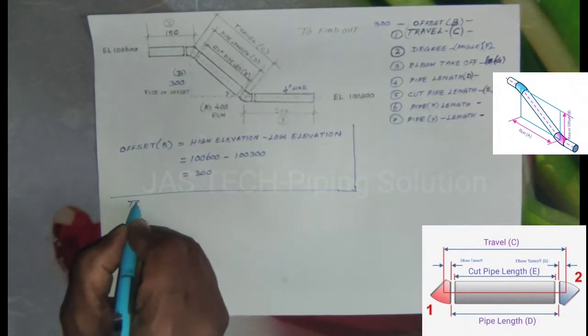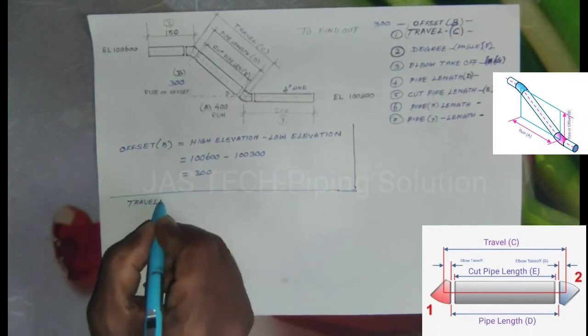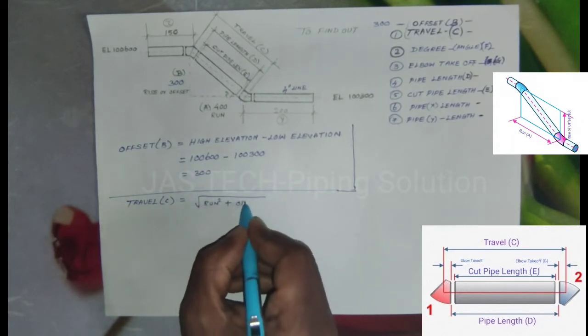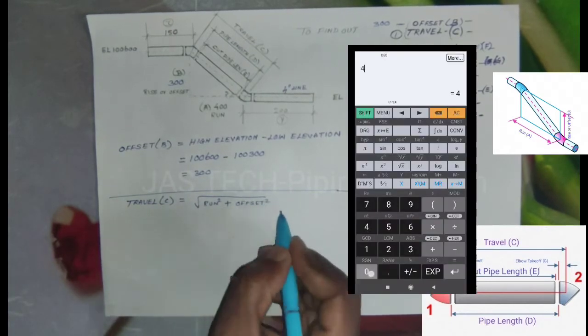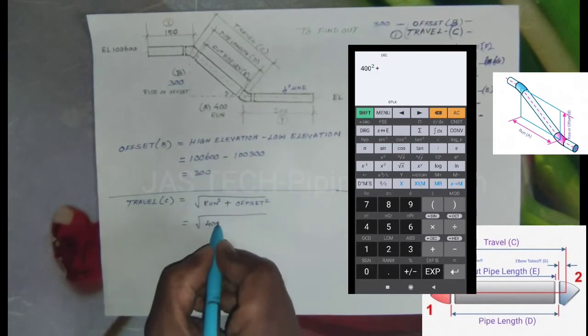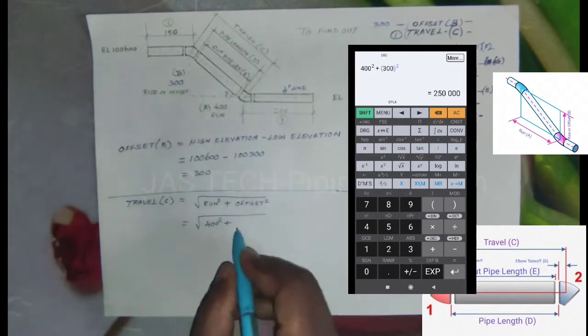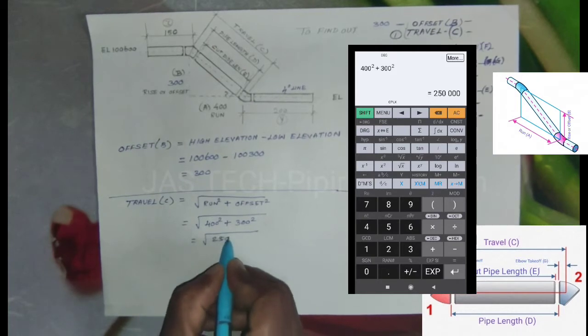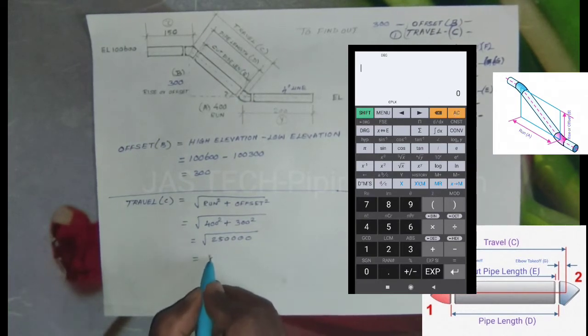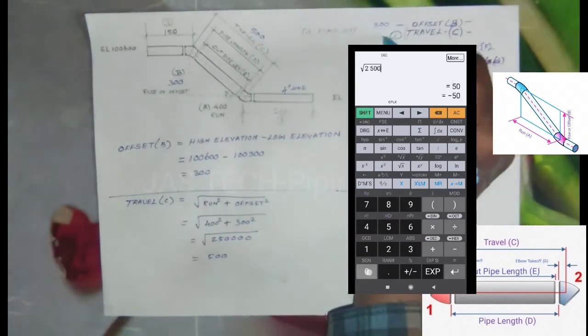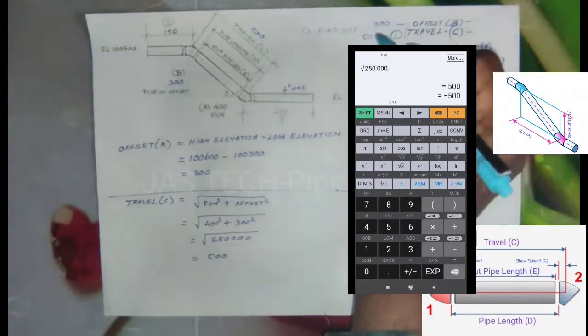Second one, to find out Travel C. The formula is: root of Run squared plus Offset squared. So root of Run squared, 400 squared, plus Offset 300 squared equals root of 250,000. Take the root of that, and the result will come to 500. So Travel equals 500.